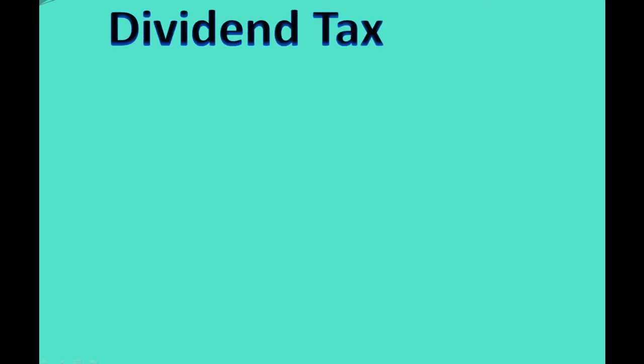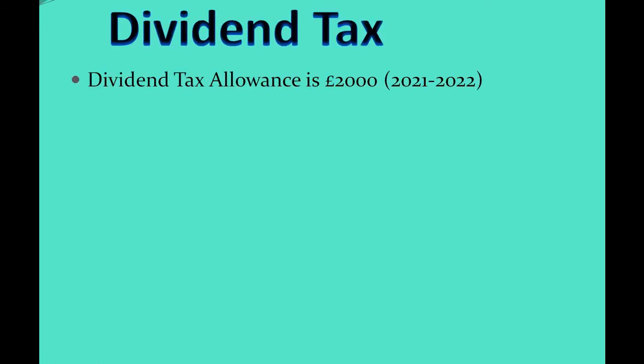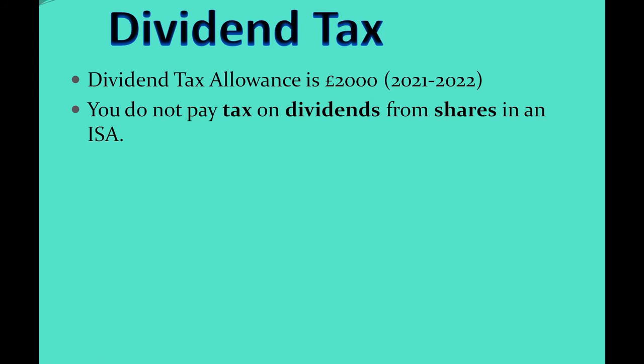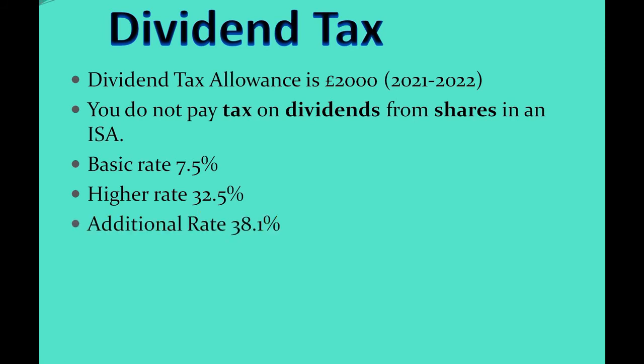Having a look at dividends tax — your dividend tax allowance for the year of 2021 to 2022 is £2,000. If your stocks and shares are in an ISA account, you don't need to pay any tax on your dividends. But if not, you pay a basic rate of 7.5%, a higher rate of 32.5%, or an additional rate of 38.1%, depending on your income tax band.